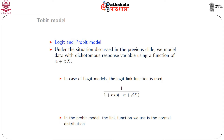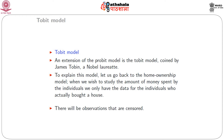In the logit model, we use the CDF of the logistic distribution: E(y|xᵢ) = 1 / (1 + exp(−(α + βxᵢ))). In the probit model, we use the normal distribution CDF as the link function. An extension is the Tobit model, coined by James Tobin, a Nobel laureate economist.